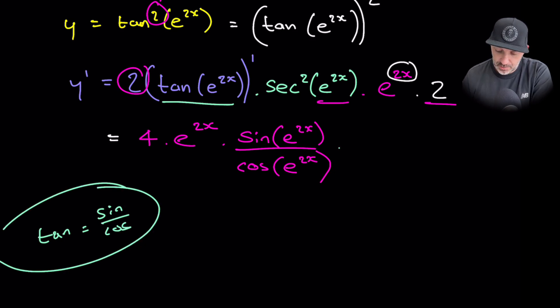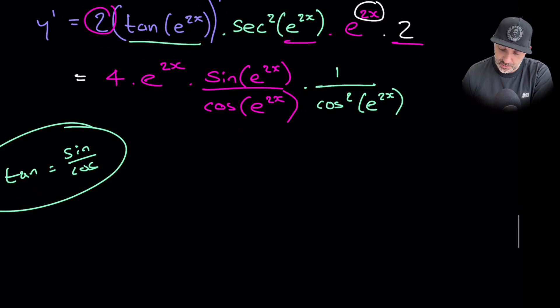So sine over cos times by sec. Now, sec is 1 over cosine squared, e to the 2x. So what's going to happen here is we've got to just tidy all of this up.